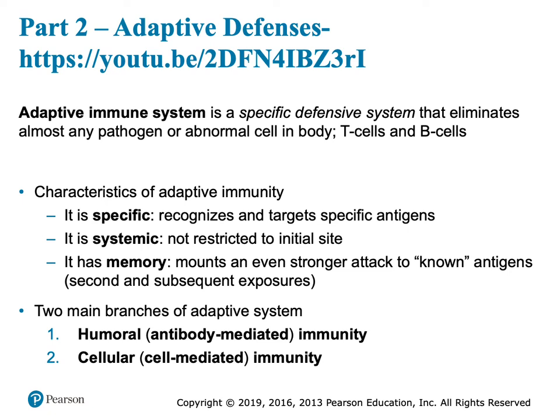The adaptive immune system is much more specific. A neutrophil is going to gobble up any bacteria — he doesn't care what the bacteria is. A macrophage goes and cleans up mess, anything the neutrophil missed. He doesn't care what bacteria it is. Fever doesn't care why you have it — your hypothalamus was told to create a fever. Adaptive immune system is very specific.